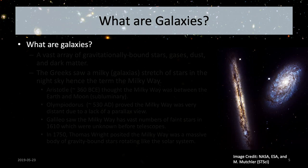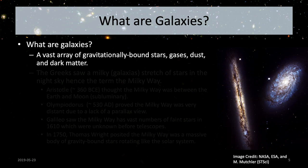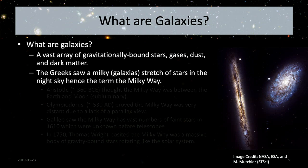So what are galaxies, actually? A galaxy can be thought of as a vast array of millions to over a trillion stars, all gravitationally bound, along with lots of gas, dust, planets, stellar remnants, and other things that tend to form some very specific shapes, as we'll find out.